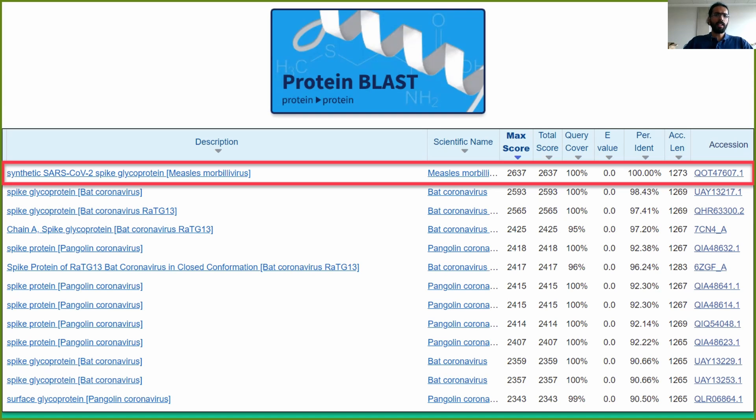Should we be surprised by this? Despite the fact that we have excluded SARS-CoV-2 from our search space, the first hit is 100% identical to our query. If we look at the details of the top hit, you will see that the synthetic variant was created by inserting a SARS-CoV-2 S-protein sequence into the measles morbillivirus genome in order to create a COVID-19 vaccine.